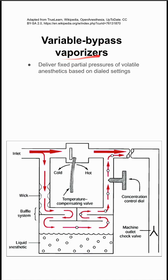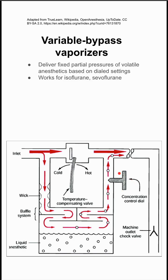Some notes on the variable bypass vaporizers. This is a device that delivers a fixed partial pressure of volatile anesthetic based on dialed settings. You can see that the inlet of gas here splits into two streams, one of which absorbs the anesthetic, and you can change the density of the streams with this concentration dial here.